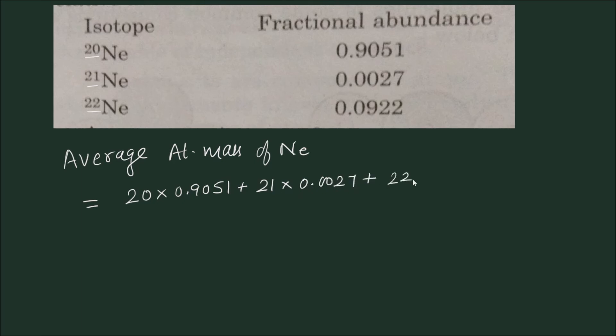plus 22 times 0.0922. So what is the average value? 20.18. Now, no need to write the unit because the unit is not given to you. And at the same time, atomic mass of each isotope is also not given, so just mass number is considered. This is the result.